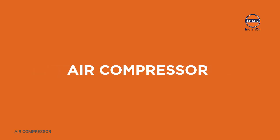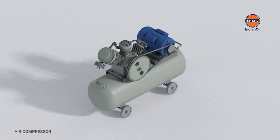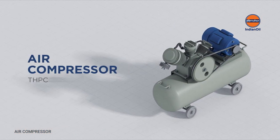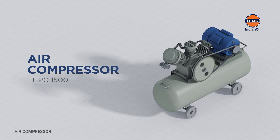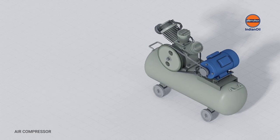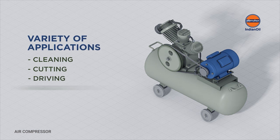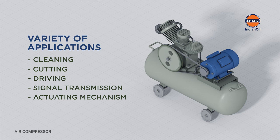How does an air compressor work? An air compressor is a pneumatic device that converts power into potential energy stored in pressurized air. The energy contained in the compressed air can be used for a variety of applications such as cleaning, cutting, driving, signal transmission, actuating mechanism, etc.